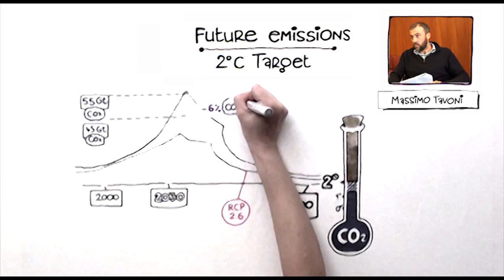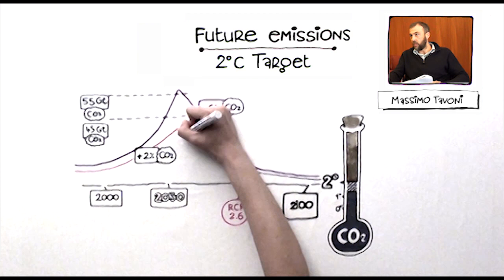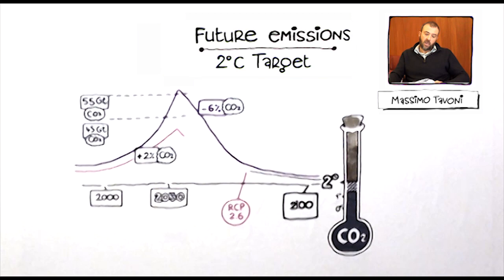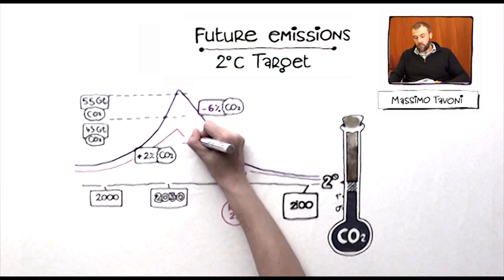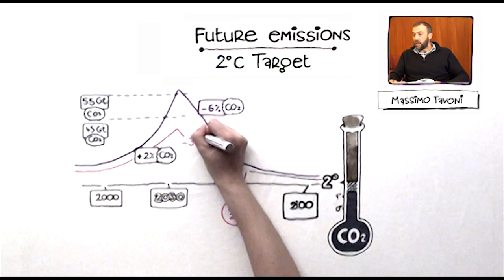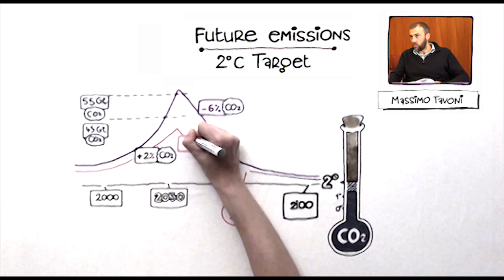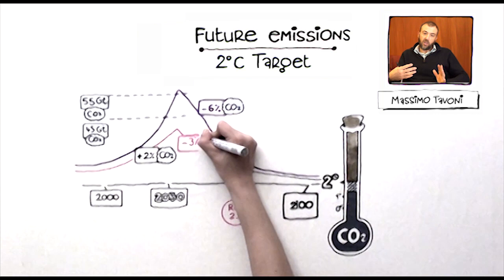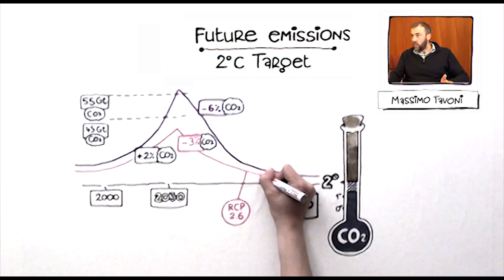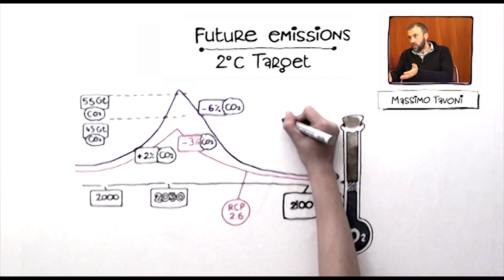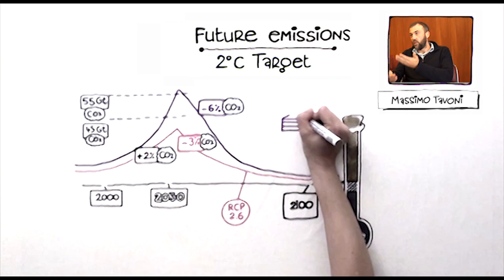If we were to be a bit more ambitious and be below 55, in the range maybe between 50 and 55 or even below 50, then we could achieve 2 degrees with a much lower effort, 3% emission reduction, not 6%. So this is telling you that if we delay action to 2030, to above 55 billion tons of CO2, we will need to double the effort in terms of emission reduction rates, and of course to double also the economic effort, because more emission reduction means also higher costs. The cost increase is quantifiable at about plus 50%.